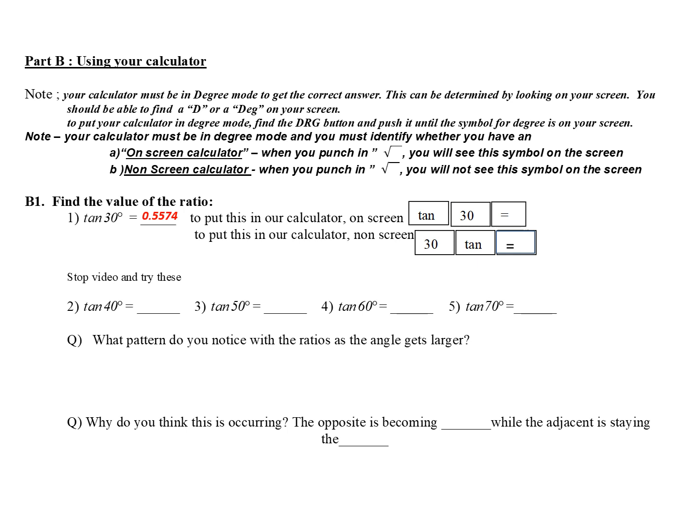Now one of the big parts of trigonometry is the ability to use your calculator. First, your calculator has to be in the correct mode. There are three modes for your calculator: degree, gradient, and radian. Your calculator needs to be in degree mode, so when you look on your screen there should be a D or a DEG somewhere. If you can't find it, find the DRG button on your calculator and push it until there is a D or a DEG on your screen.